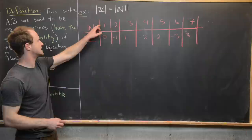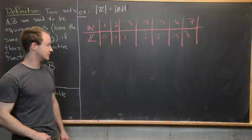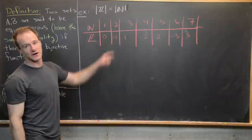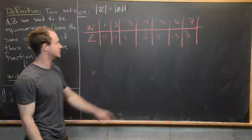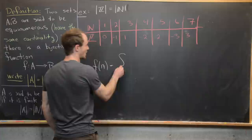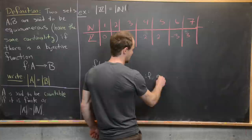Now if we wanted to explicitly write this as a function — which we can do in this case, though as we'll see later we won't always be able to — we can do that. Notice that all even natural numbers 2, 4, 6, 8, and so on map to negative half of their value: 2 maps to −1, 4 maps to −2, 6 maps to −3, and 8 would map to −4. That gives us motivation for a piecewise definition: f(n) equals −n/2 if n is even.